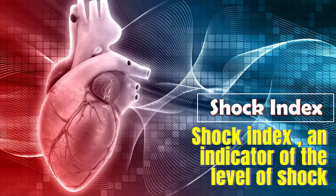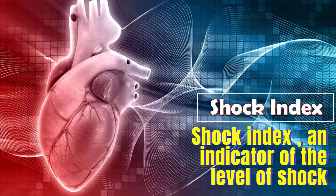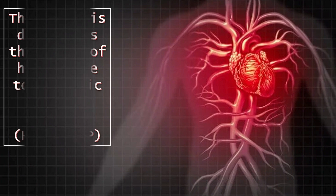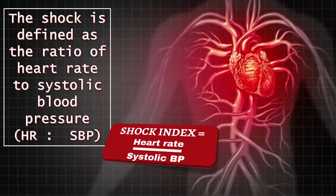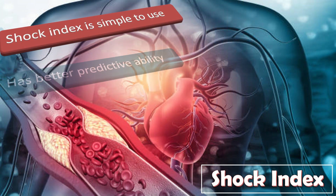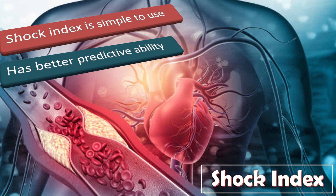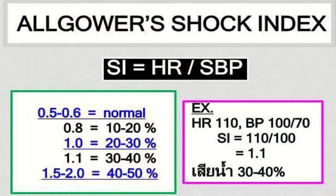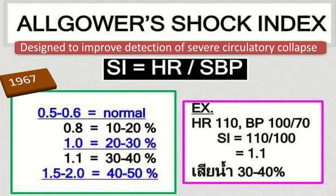Shock index is the topic of our discussion today, which is an important indicator of the level of occult shock, especially in acute hemorrhage. It is defined as the ratio of heart rate to systolic blood pressure. Shock index is simple to use and has better predictive ability than other vital signs because it detects acute changes in the maternal cardiovascular system and acts as an early marker to predict adverse outcomes. The shock index was proposed by Algower in 1967 as a quotient designed to improve the detection of severe circulatory collapse in the setting of hypovolemic patients.